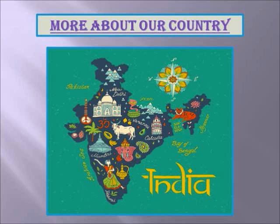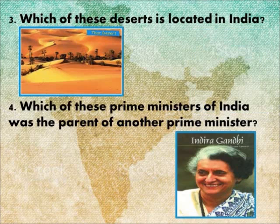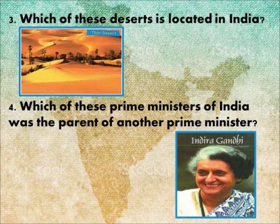Chapter 34: More About Our Country. First, which is the largest state in India in terms of area? The answer is Rajasthan. Second, which city in India is the capital of two states, Punjab and Haryana? The answer is Chandigarh. Third, which of these deserts is located in India? The answer is the Thar Desert.